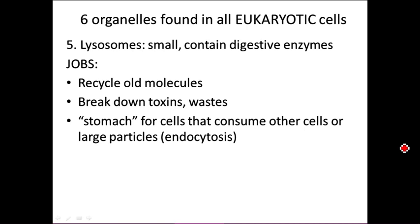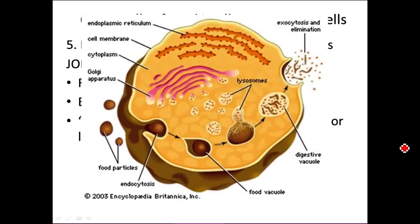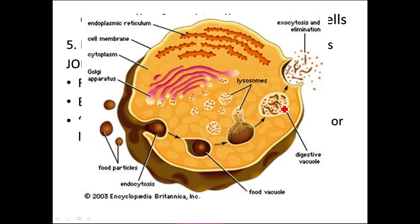White blood cells perform endocytosis — the white blood cell goes over the bacterium, brings it into the cell, and the lysosome merges with the food vacuole, putting digestive enzymes inside. The food particle is shown being incorporated into a food vacuole — really a membrane-bound structure with the bacterium inside. The lysosome's enzymes are then introduced, and the component parts go out into the cell, or the waste is eliminated.